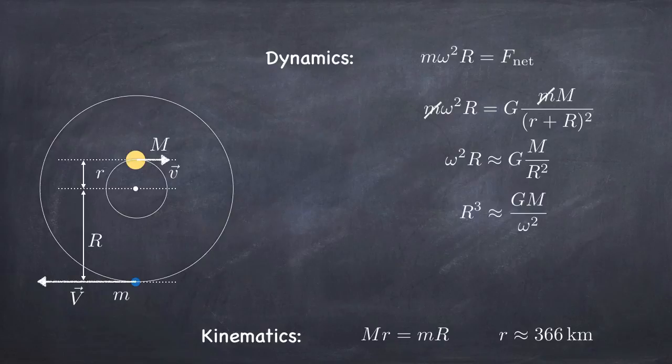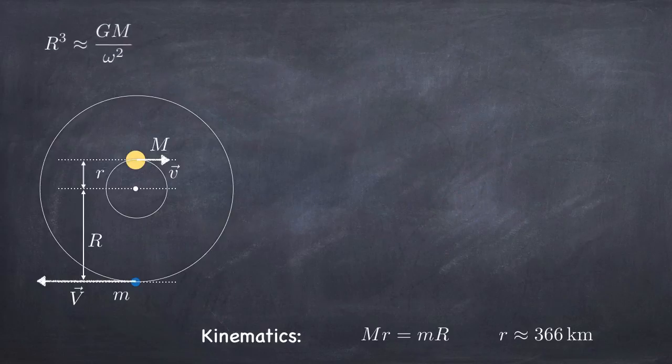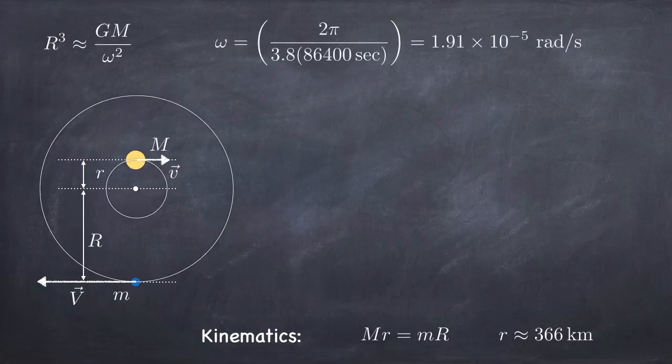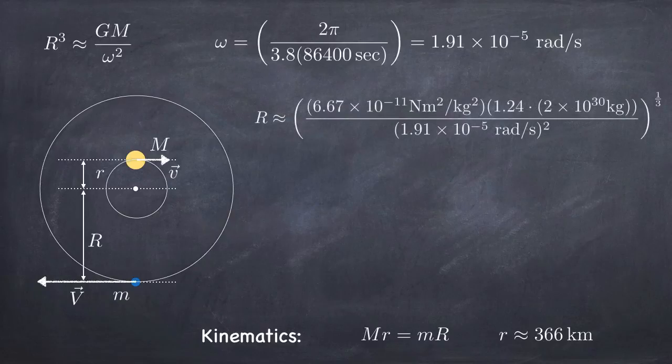We can solve for big R and calculate its value because we know the mass of the star, we know the period of the orbit, and of course we know Newton's universal gravitational constant. So let's put all that in there. We'll calculate omega, 2π divided by 3.8 days and put that in the formula that we just cooked up from the dynamics and we get the orbital radius is almost 8 million kilometers.